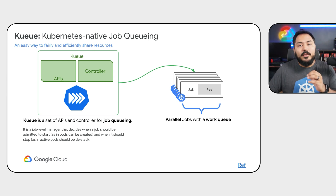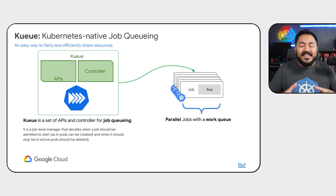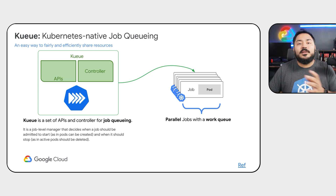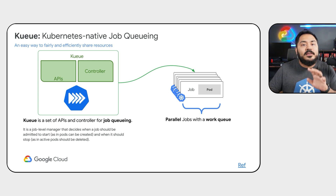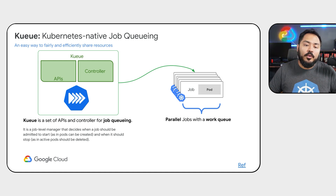With Kueue, we can handle preemption, as well as fair sharing of resources, where the same platform can be used by multiple teams at the same time without stepping on each other's toes. Kueue is a job-level manager that decides when a job should be admitted to start or when it should stop.